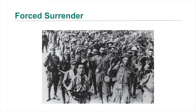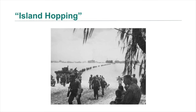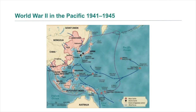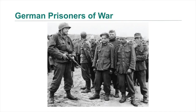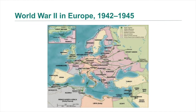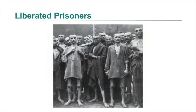This image shows some of the 13,000 American troops forced to surrender to the Japanese on Corregidor Island in the Philippines in May 1942. This image shows American Army reinforcements waiting ashore on Saipan, one of the Mariana Islands, during one of the bloodiest battles in the island-hopping campaign in the Pacific Theater. This is an image of German prisoners of war. This is a photograph showing prisoners of a German concentration camp liberated by Allied troops in 1945.